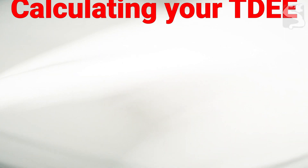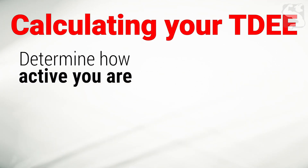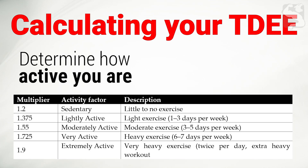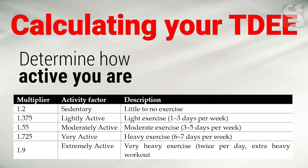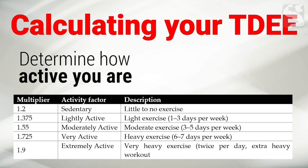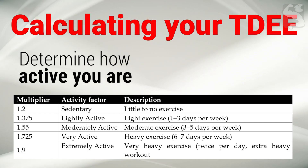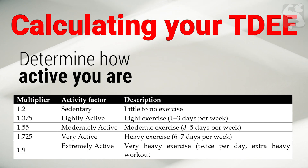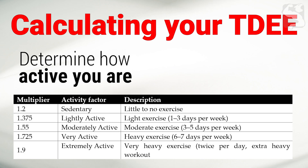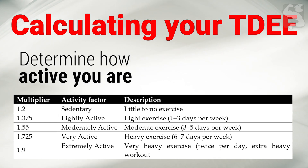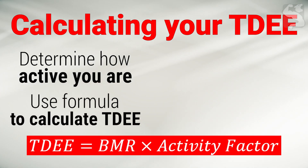The first step in calculating your TDEE is determining how active you are. Refer to this table and choose the activity factor that best describes your level of activity. The activity factor includes all activities from when you wake up to when you go to bed — weight lifting, cardio, desk work, labor, sports, recreation, walking, housework, and anything in between. If you are in doubt between two activity factors, choose the lower one, as people tend to overestimate their caloric burn. Once you have chosen your activity factor, use the simplified formula to calculate your TDEE.